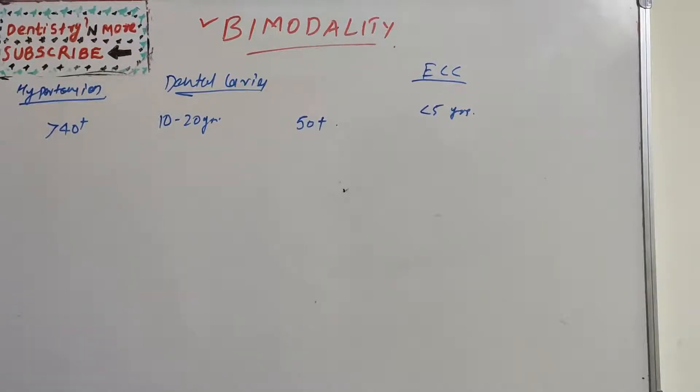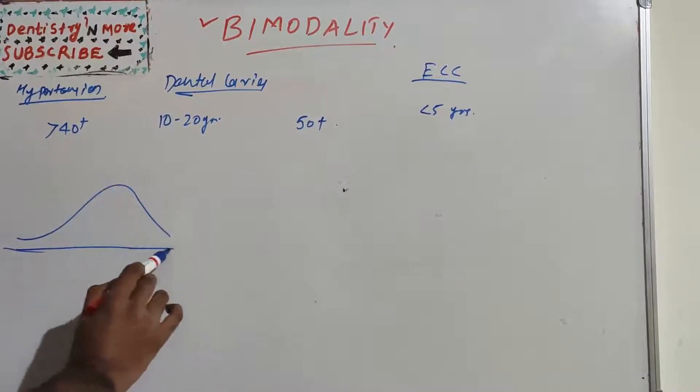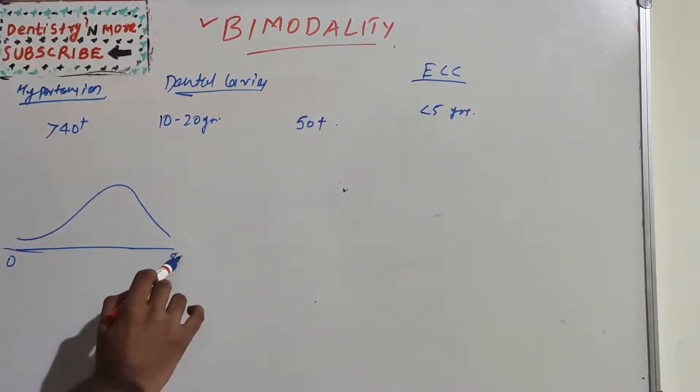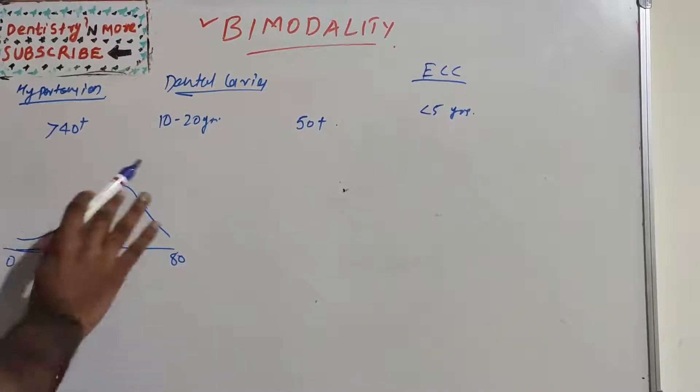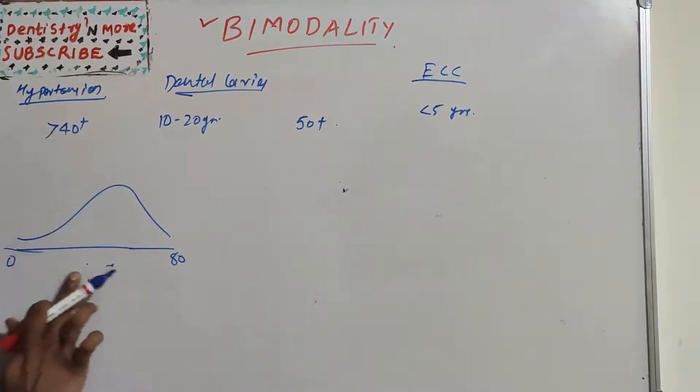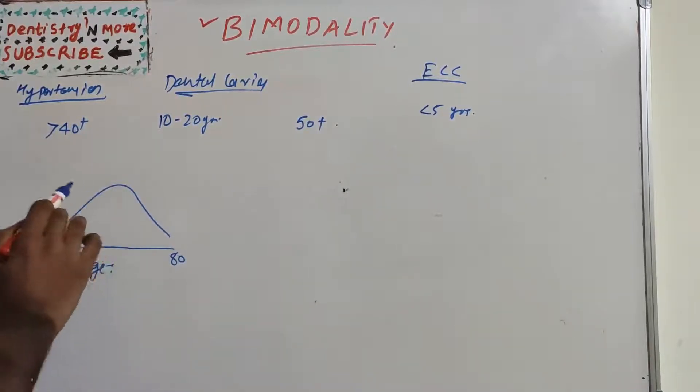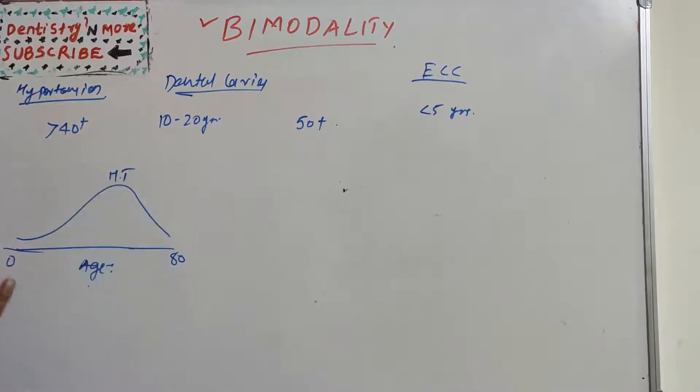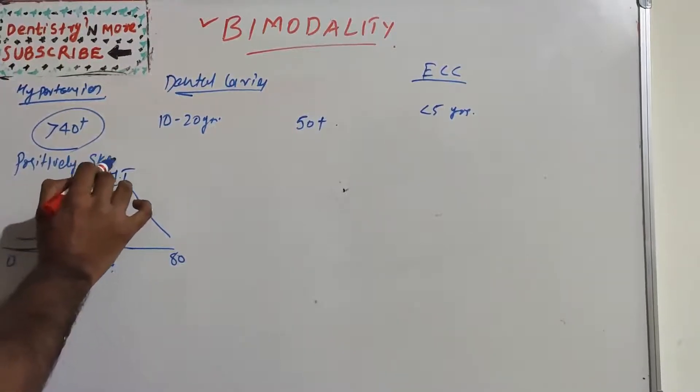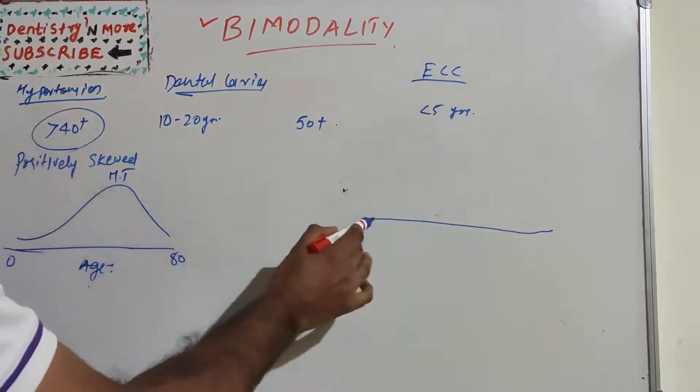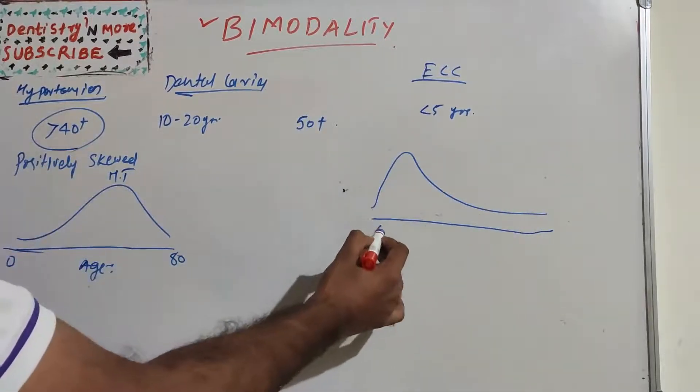If we represent this into a graph, if this is the age 0 to 80 and we are putting hypertension, this graph is towards the right side because most of the cases are towards the end, that is the right side. This is known as positively skewed.